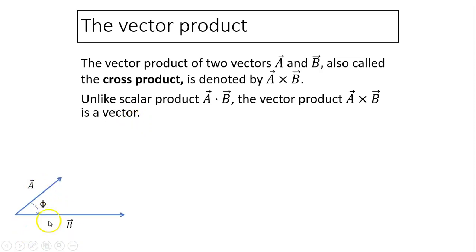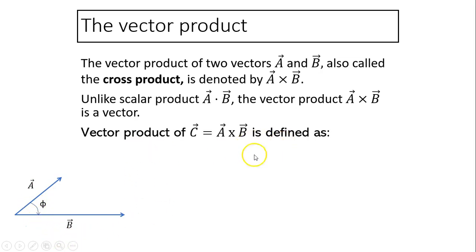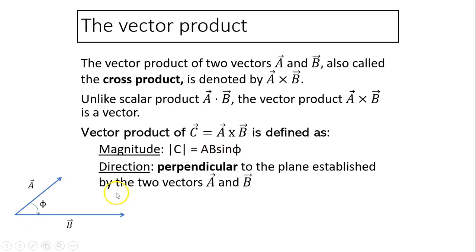Here are vectors a and b, with the angle between them being phi. The vector product has two parts. Its magnitude is the magnitude of a times the magnitude of b times sine of phi. The direction is perpendicular to the plane established by the two vectors a and b. For example, if a and b establish a plane that is the same as the screen, then a cross b has a direction perpendicular to the screen.